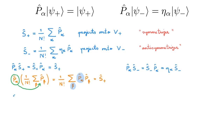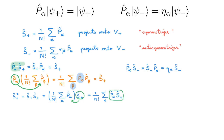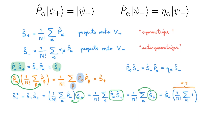With these results, we calculate S-plus squared. Writing out the first S-plus explicitly and moving the second S-plus inside the sum, we use the fact that P-alpha times S-plus equals S-plus. Taking S-plus out of the sum, the remaining factor is N-factorial divided by N-factorial, which equals 1, giving us S-plus. We can do the same to show that S-minus squared equals S-minus. These two results confirm that the symmetrizer and antisymmetrizer are projection operators.